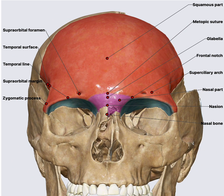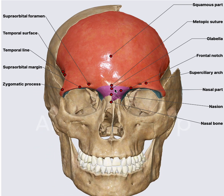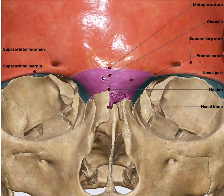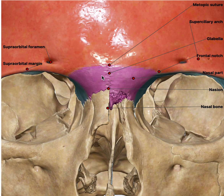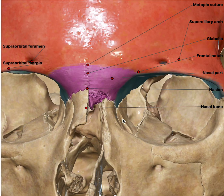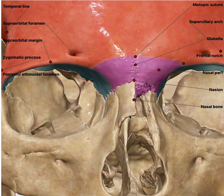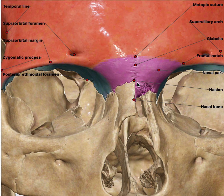Moving on to the third part — the nasal part. Its surgical importance includes taking a lesion, performing a glabellar flap, looking into the septum, or in cases of rhinoplasty where there can be a bony ridge at the junction between the nasal bone and the frontal bone.